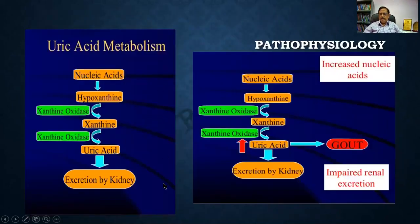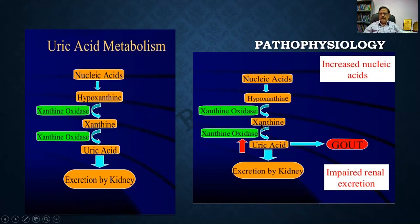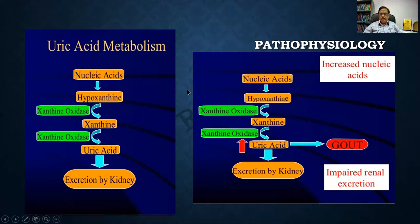In the normal uric acid metabolism diagram, there are two abnormal conditions to remember. One is increased turnover of cells producing increased nucleic acid, which leads to excess uric acid and gout. The second is impaired renal excretion, where uric acid is retained, again leading to uric acid crystals and gout. Remember these two abnormalities in the box.